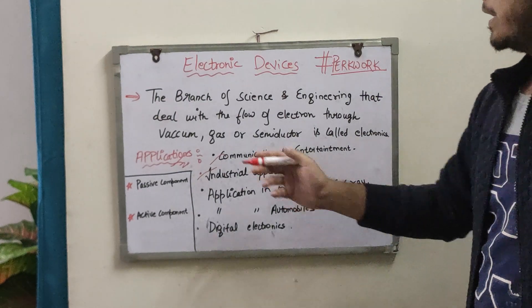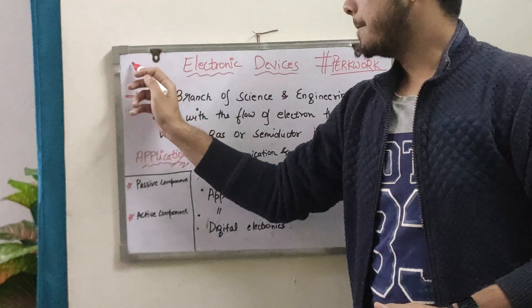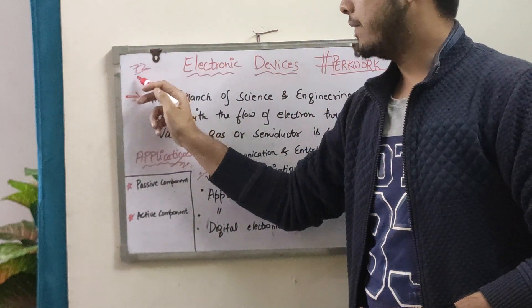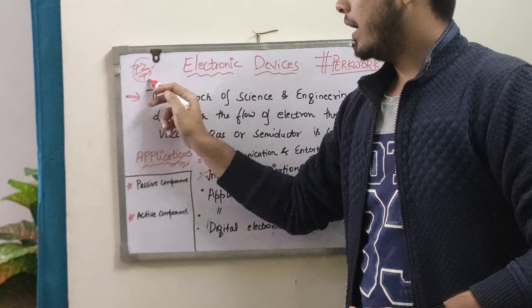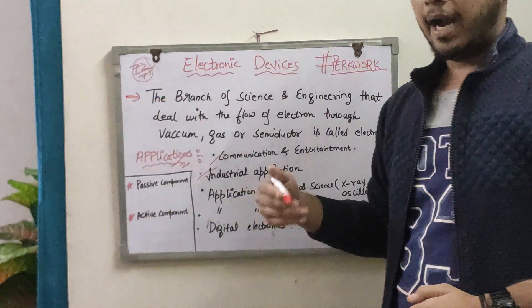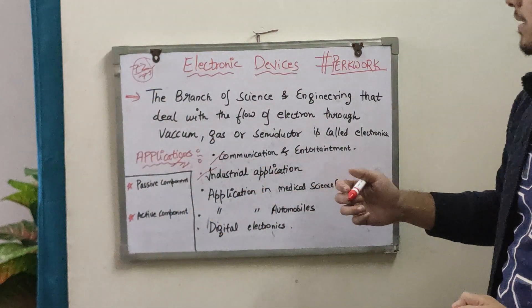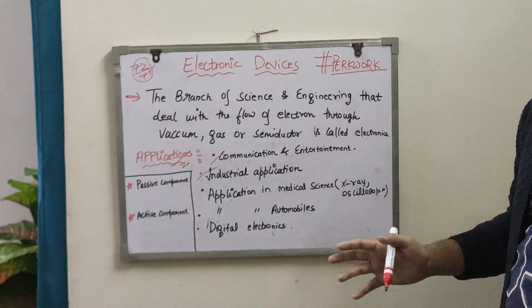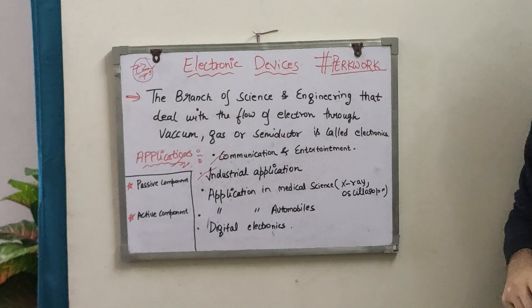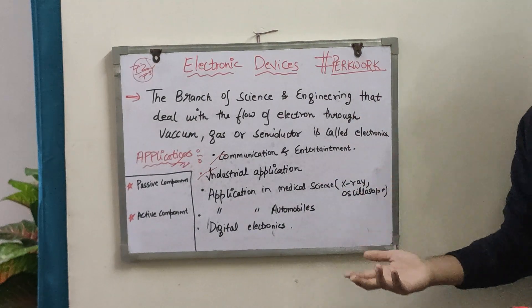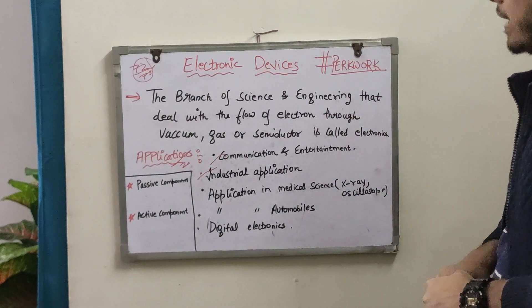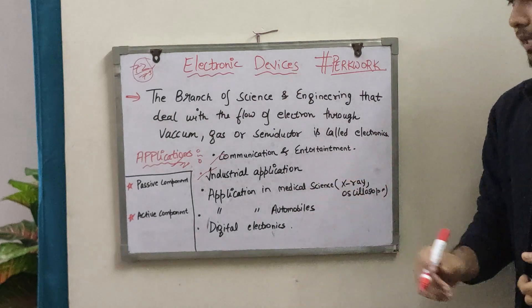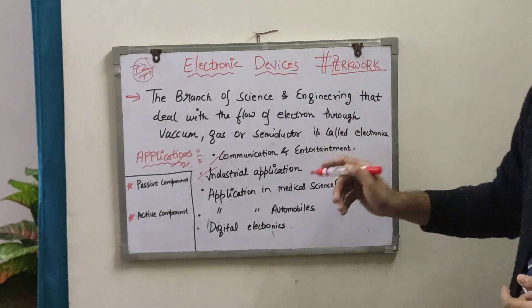Guys, I'll tell you that electronic devices pe mera 72 out of 75 aaya tha. I'll try ki jo bhi cheez maine padhi hai, exactly wahi bataaun, saare concepts bataaun, aur jaise maine answers dikhaye hain unki bhi bataaun — yahi try karunga. Toh start karte hain electronic devices.